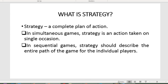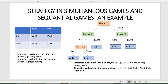Strategy is another key concept in game theory. Informally, you can define it as a complete plan of actions. In simultaneous games, a strategy is an action taken on a single occasion. In sequential games it is more complicated — it must describe all possible paths of the game for individual players. In simultaneous games, strategies for player one are simply up and down, and for player two are right and left.